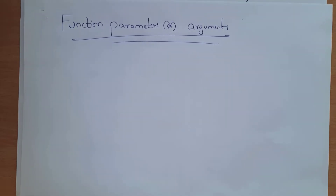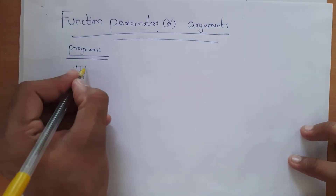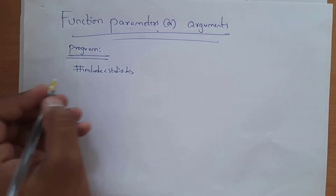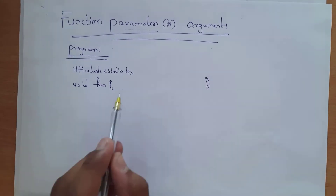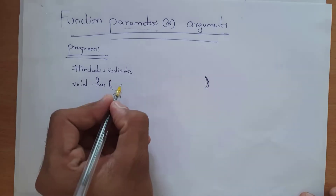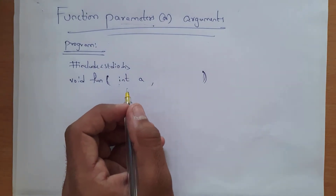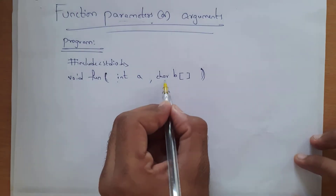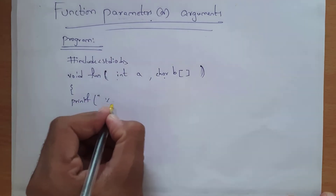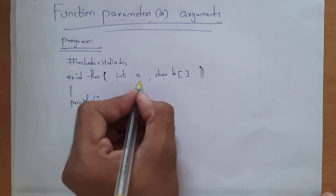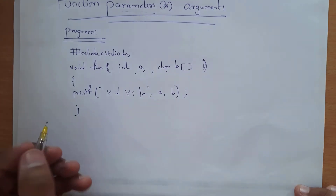Next, passing parameters to a function — we also call these parameters arguments. Write hash include stdio.h, then void fun. Whatever you write inside the brackets are arguments. To pass two arguments: int a for an integer value, and character b with square brackets for a string, since character data type with an array represents a string. Inside the function write printf with %d and %s for a and b. This will print one integer value and one string value. Then write void main.